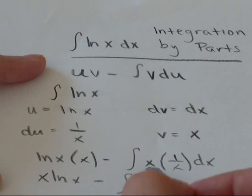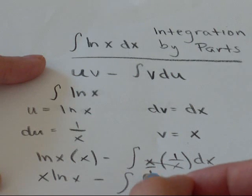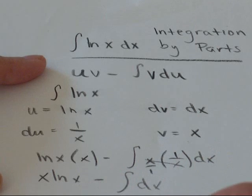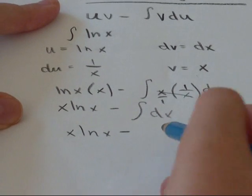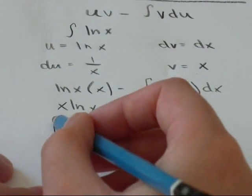The x is really x over 1, so these are going to cancel and just give us 1 dx. So we have x log x minus, what happens when you integrate dx? You just get x. So that's our answer.